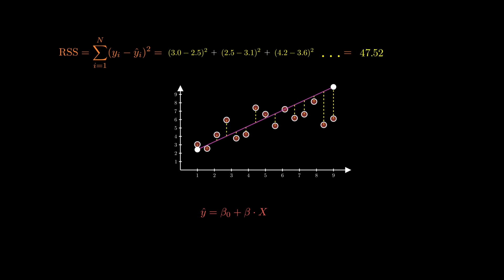And intuitively, we want that number to be as small as possible, ideally zero, because that means our model is fitting the data as closely as it can.